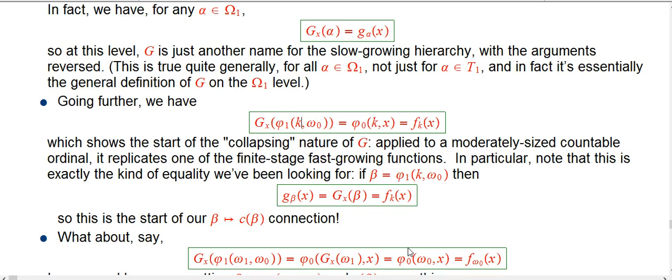Well, again, by definition, it demotes the 1 to a 0. It applies Gx to k, but that's already an integer, doesn't do anything. And it applies Gx to omega 0, which puts the x into the mix.